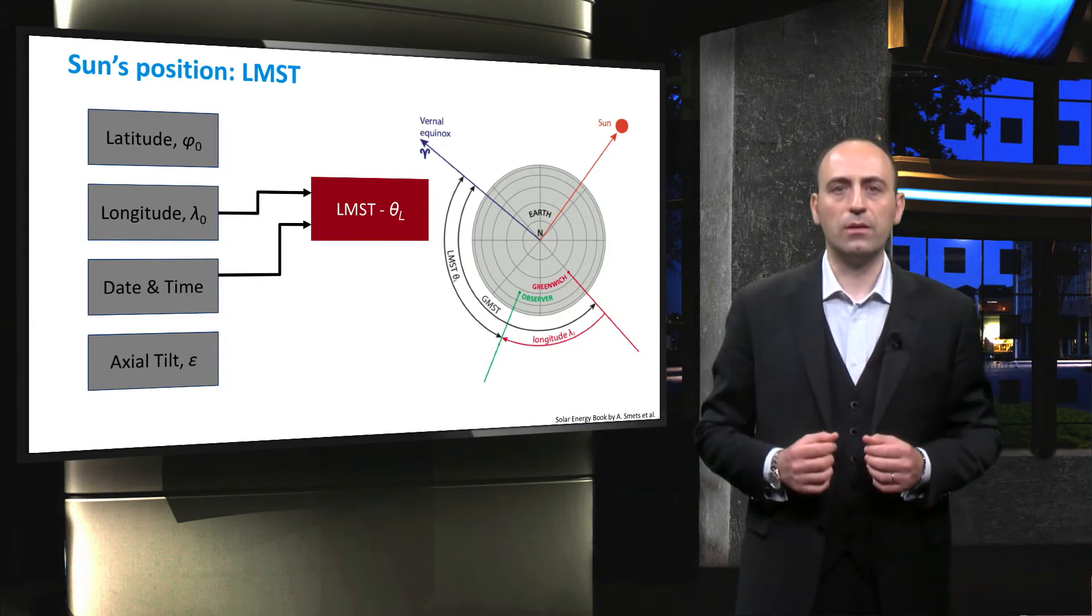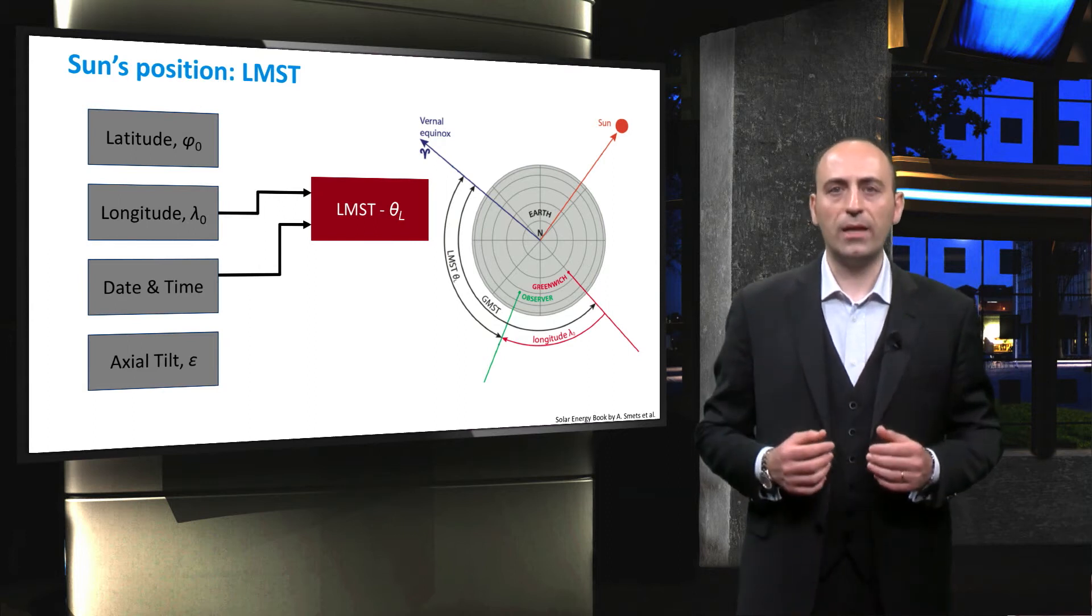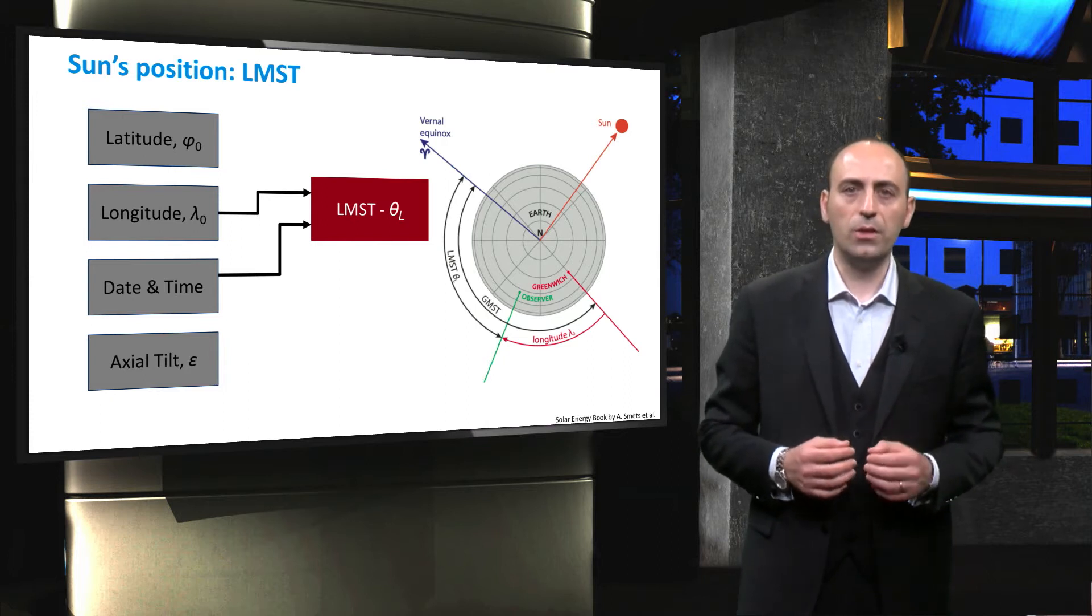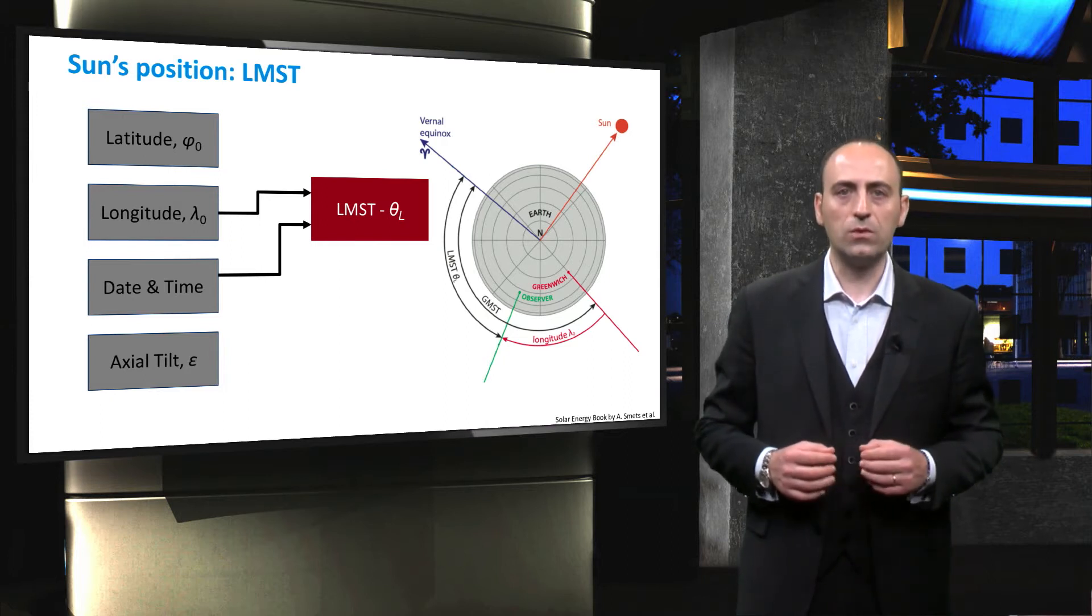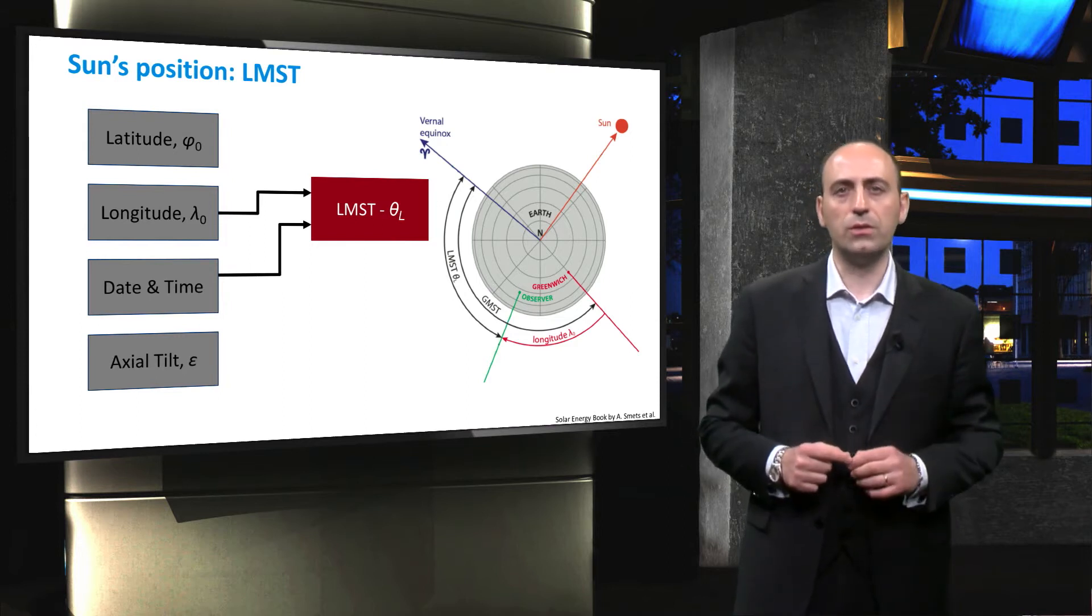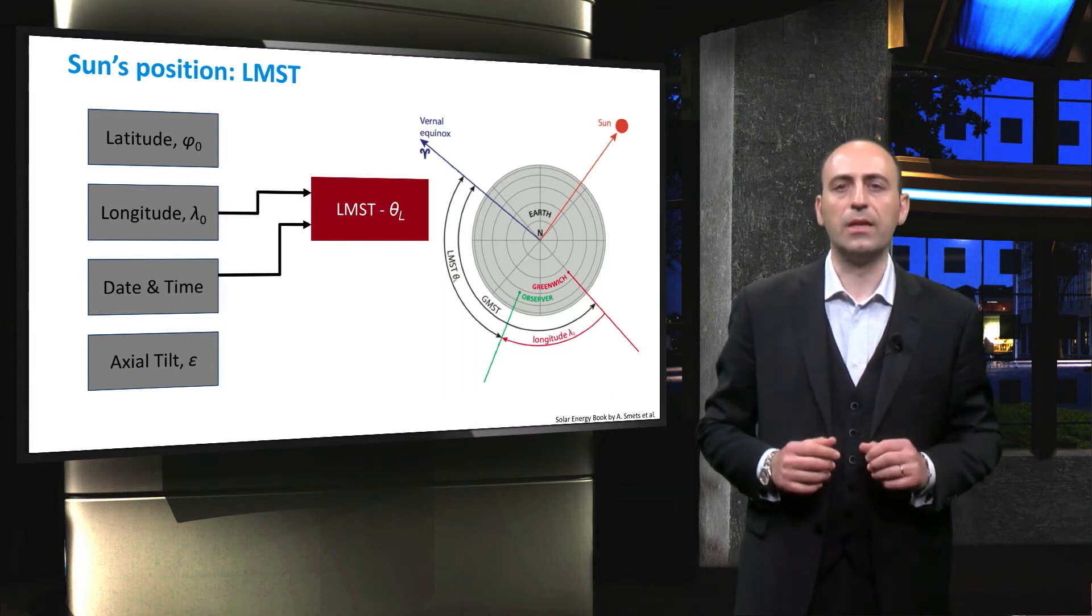LMST is a way to keep track of the time based on the sidereal day, which is the duration between the two passes of the vernal equinox through the observer's meridian, and it is slightly shorter than a solar day. Its duration is approximately 23 hours and 56 minutes.